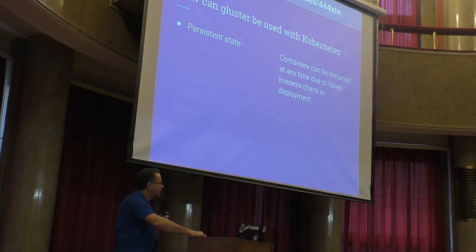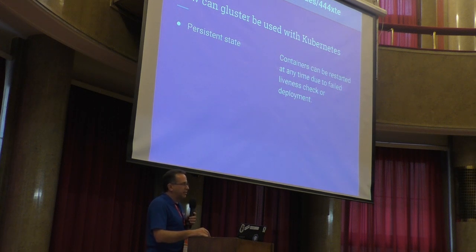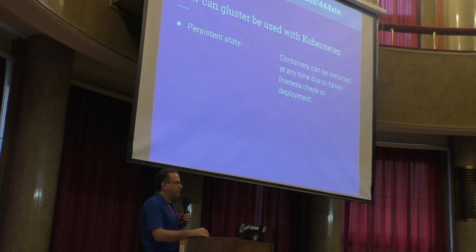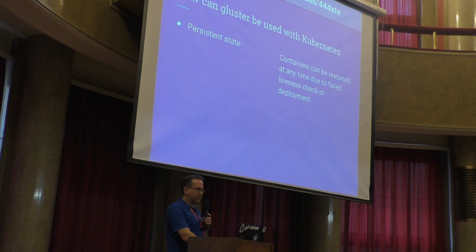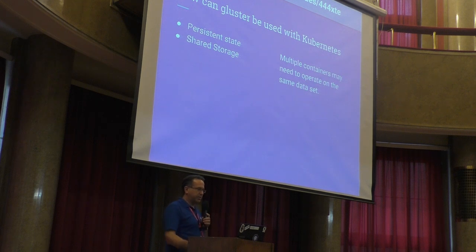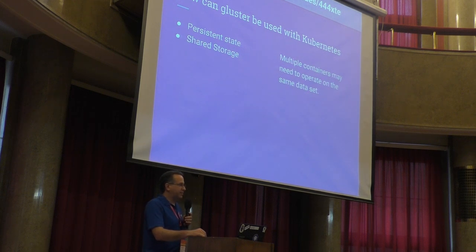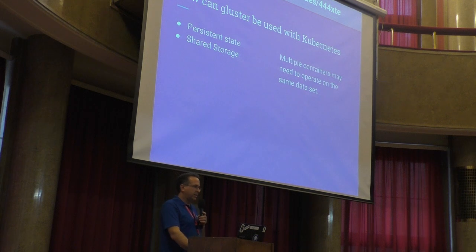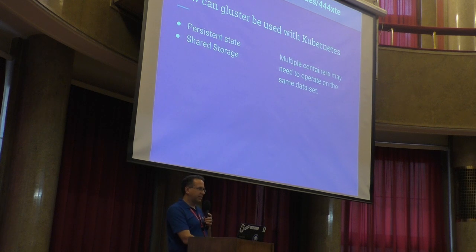How can GlusterFS be used with Kubernetes? One of the nice uses for GlusterFS with Kubernetes is persistent state. If your pods can be deleted at any time if they fail a liveness check and restarted anywhere else on any of the nodes, you need that data to be available throughout your entire cluster. So having persistent state that is accessible from everywhere is greatly valuable. It can also be used for shared data. At home I've got a media server that I download files to and share across all our devices, so I need all my downloader applications having access to the same data store. Obviously GlusterFS is great for that.